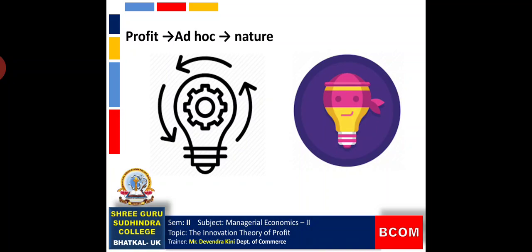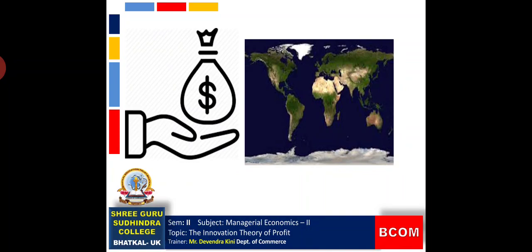That is why Schumpeter regards profit as a dynamic income which does not exist in the static society where there are no innovations.